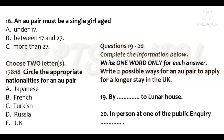An au pair must be a single girl aged at least 17 and no older than 27 when she first becomes an au pair. She must be a national of a Western European country which includes Malta, Cyprus and Turkey. The longest a girl may stay in the UK as an au pair is two years. A girl who has been in the UK before as an au pair will be allowed to come again only if the total period is not more than two years. An au pair is not allowed to take a job in this country. The light household duties which are part of the au pair arrangement are not regarded as employment.